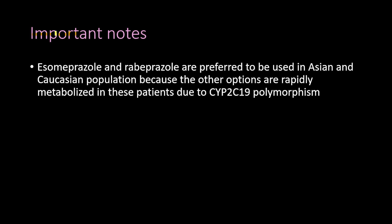An important note: esomeprazole and rabeprazole are preferred PPIs in Asian and Caucasian populations because other options like omeprazole are rapidly metabolized in these patients due to a cytochrome P450 2C19 polymorphism. Please like, comment your ideas and questions, and subscribe.